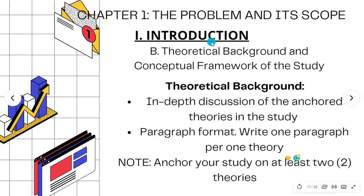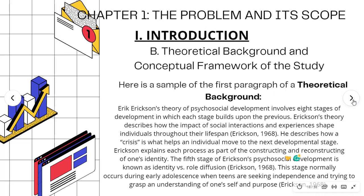Part B of the Introduction is the Theoretical Background and Conceptual Framework of the Study. Theoretical Background is an in-depth discussion of the anchor theories of the study. It should be in paragraph format — write one paragraph per theory. Your study should anchor on at least two theories.